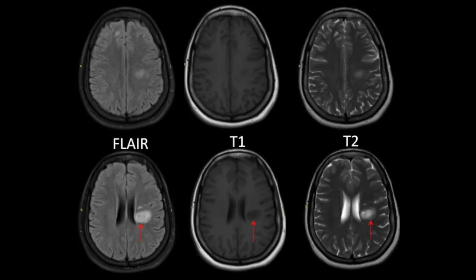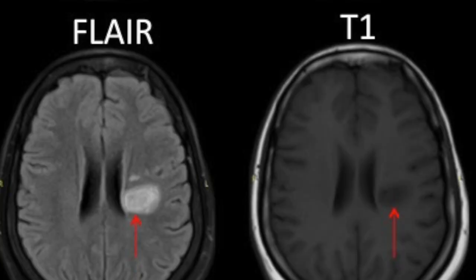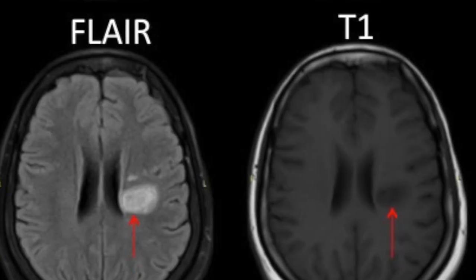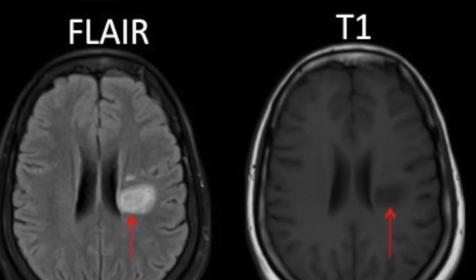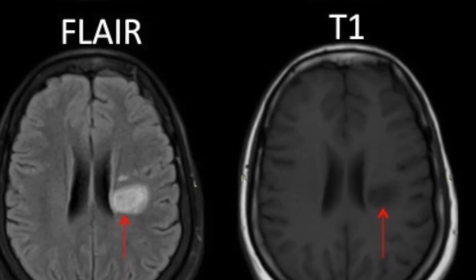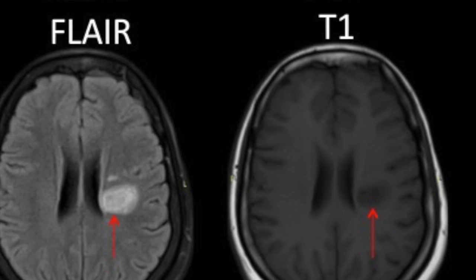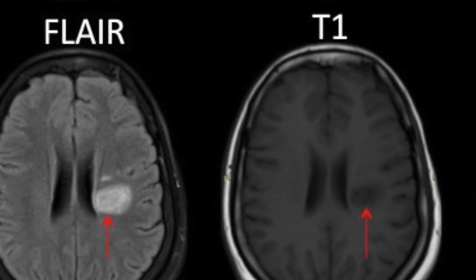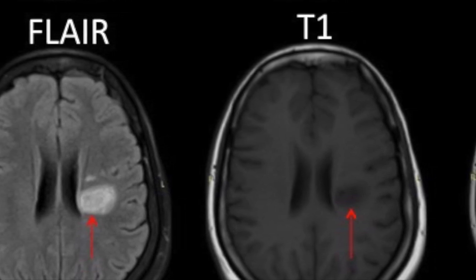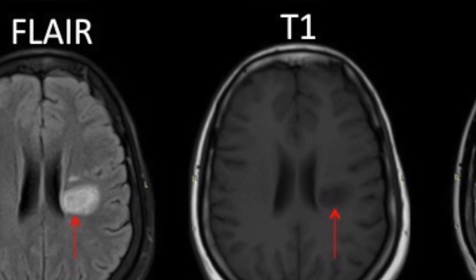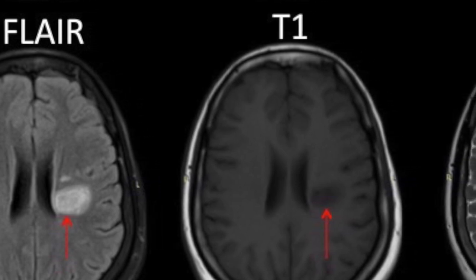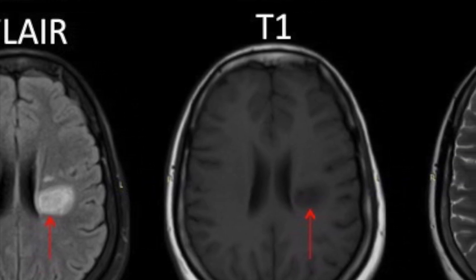An MRI of the brain was done which showed a large oval lesion within the periventricular white matter on the left side. It classically showed irregular concentric areas of alternating hyper- and iso-intense signal on FLAIR and T2-weighted images, which correspondingly appear iso- to hypo-intense on T1-weighted images.